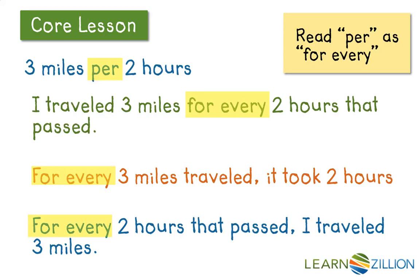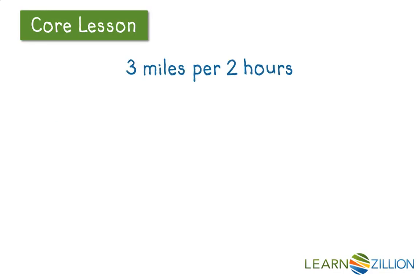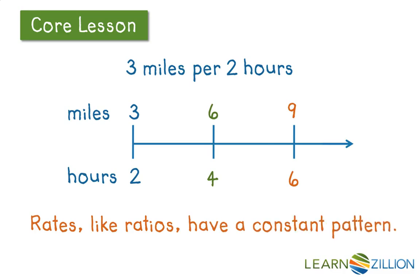I think it has a more illustrative meaning. I can see the constant pattern of this rate, which is why it's part of the ratio family in the first place. Three miles per two hours does not mean just one set of two hours and one set of three miles — I could double that to six miles per four hours, or nine miles per six hours. It's that the rate is constant, and rates like ratios have a constant pattern. That's what makes them part of the ratio family.